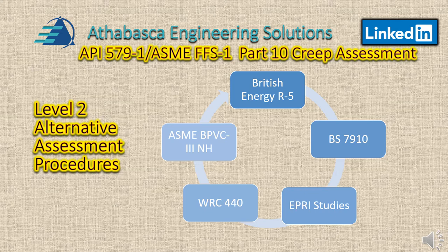There are other methods besides API 579 to assess these procedures, and they've been developed quite extensively over the last 20 years, especially for serious problems associated with CREEP and cracking. The British have a standard called R5. There is another standard called BS 7910.